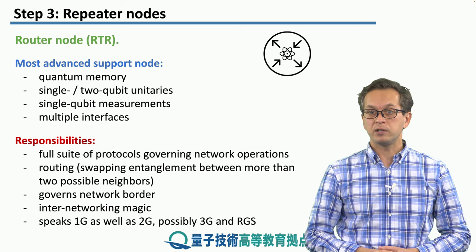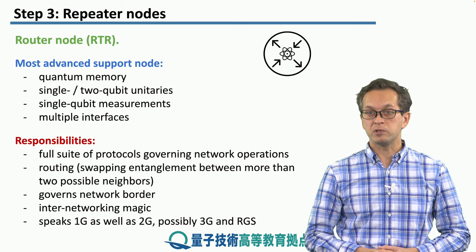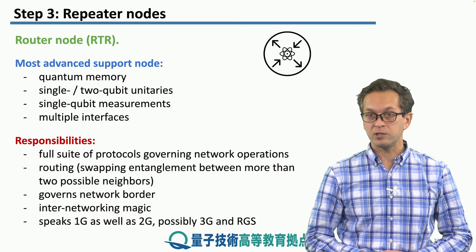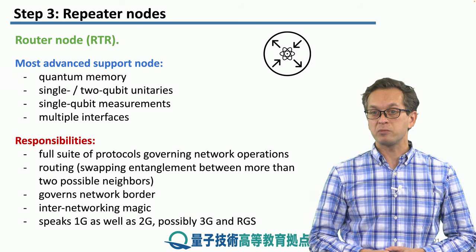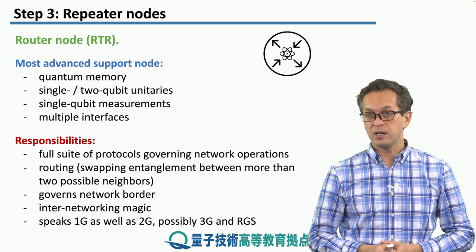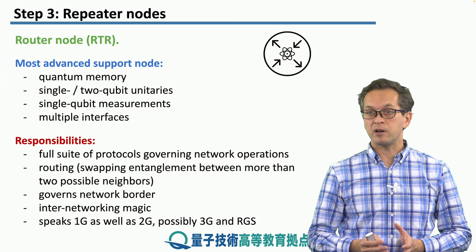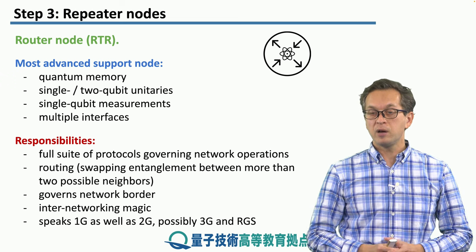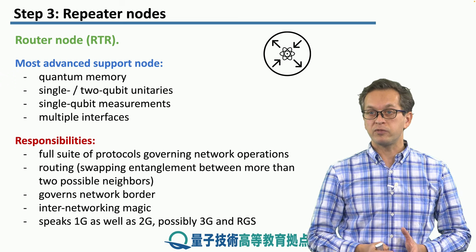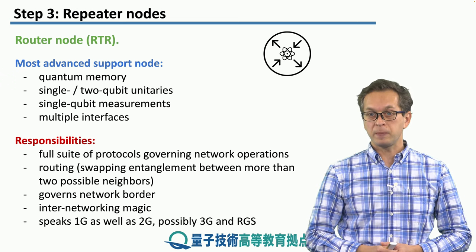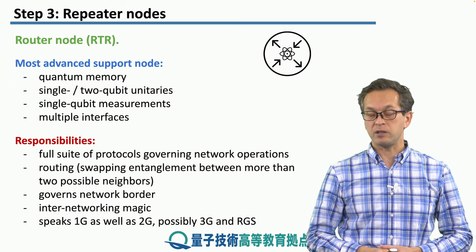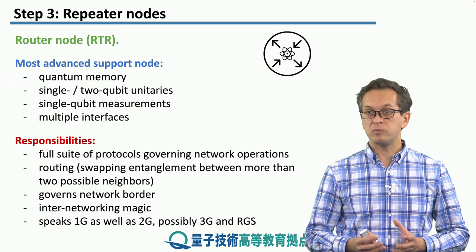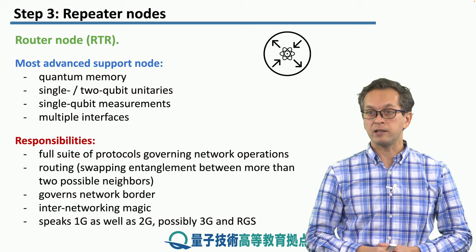The quantum router also needs to be able to speak many different languages — mainly 1G, 2G, possibly 3G, and RGS. Some of the links connecting to the quantum router might be using the first generation of quantum repeaters, some other links might use second generation, and so on. The router needs to be able to handle all of these complexities.